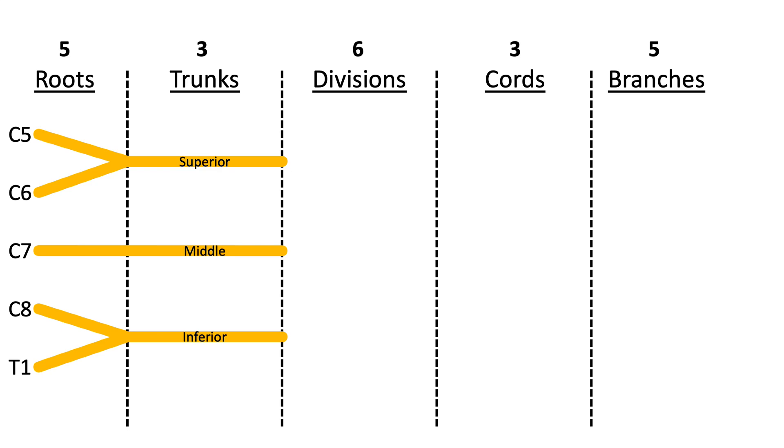In order to go from three trunks to six divisions, there has to be a multiplication factor of two. If you draw the posterior divisions first, you'll notice that they form an arrow.